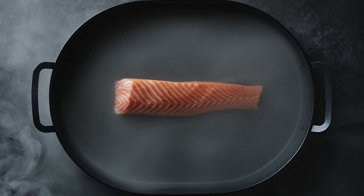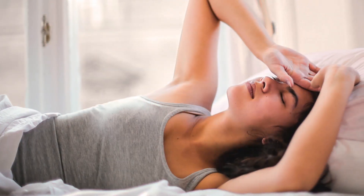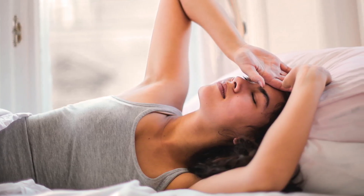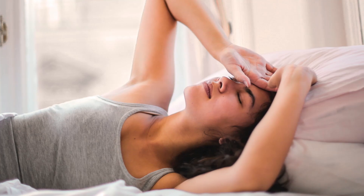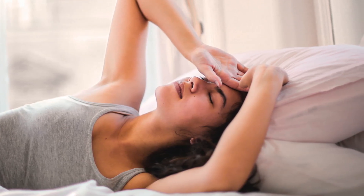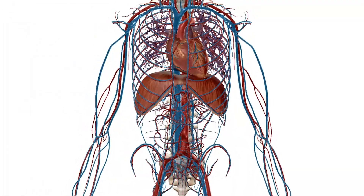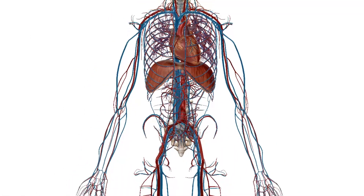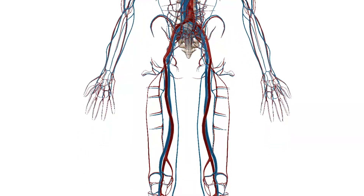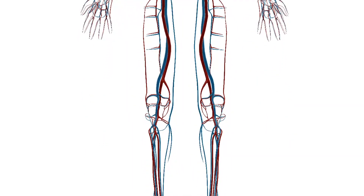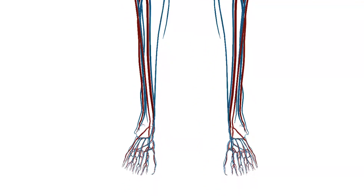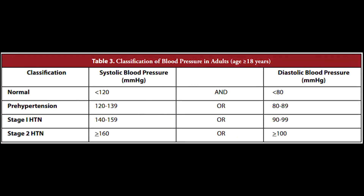Hypertension is rarely accompanied by symptoms and its identification is usually through screening or when seeking health care for an unrelated problem. Some people with high blood pressure report headaches, particularly at the back of the head and in the morning, as well as lightheadedness, vertigo, tinnitus, altered vision, or fainting episodes. These symptoms, however, might be related to associated anxiety rather than the high blood pressure itself.